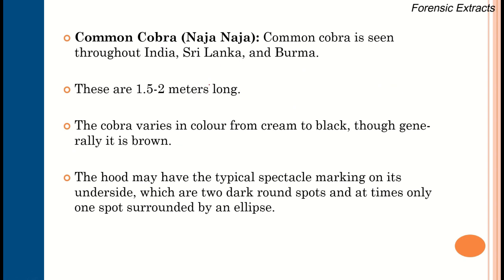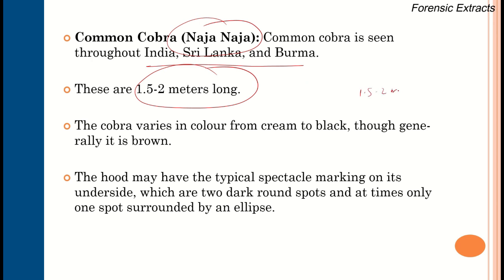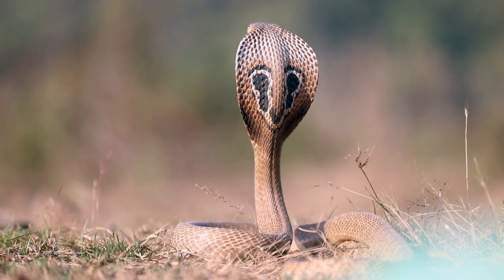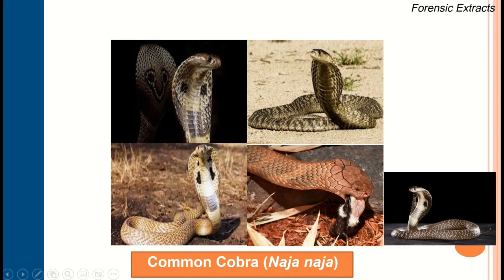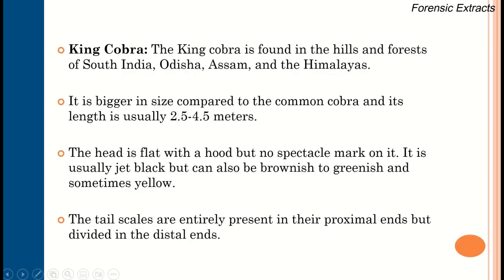The first type is the common cobra, Naja naja, commonly seen in India, Sri Lanka, and Burma. Its usual length is 1.5 to 2 meters, and color ranges from cream to black, generally brownish. The hood is the typical feature of cobra, with a characteristic spectacle mark on its underside and two dark spots, which are the identifying features of Naja naja.